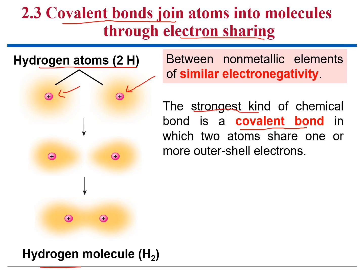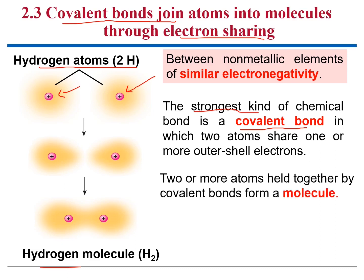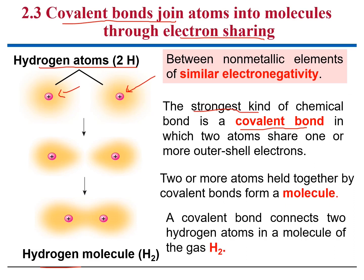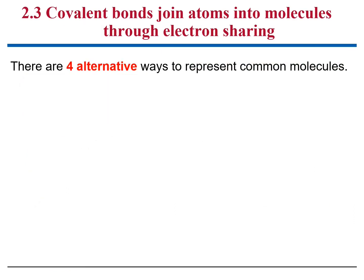Something very important is that covalent bonds are the strongest kind of chemical bonds, and two or more atoms held together by a covalent bond form a molecule. This is an example of a covalent bond — the gas of a hydrogen molecule.